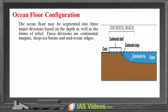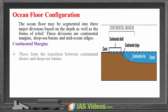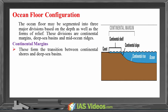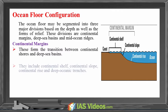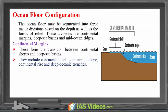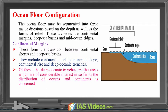The ocean floor may be segmented into three major divisions based on depth as well as the forms of relief. These divisions are continental margins, deep sea basins, and mid-ocean ridges. Continental margins form the transition between continental shores and deep sea basins. They include continental shelf, continental slope, continental rise, and deep oceanic trenches. The deep oceanic trenches are the areas of considerable interest in so far as the distribution of the oceans and continents is concerned.